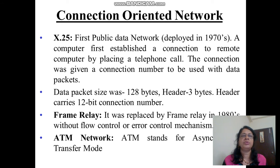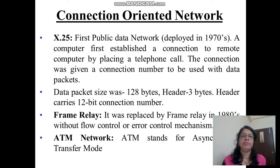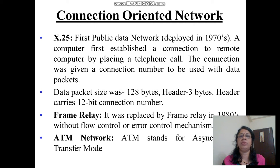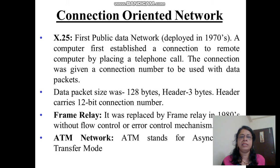X.25 was the first public data network, deployed in the 1970s. A computer first established a connection to a remote computer by placing a telephone call, and that connection was given a connection number to be used with data packets. The data packet size was 128 bytes, the header size was 3 bytes, and that header carried a 12-bit connection number.